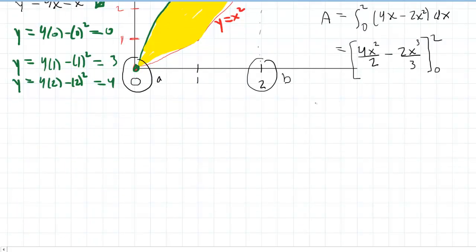Why don't we simplify this a tad? 4x squared divided by 2, of course, is just 2x squared minus 2x cubed over 3. And then evaluate it from 0 to 2.